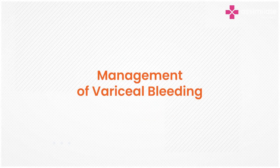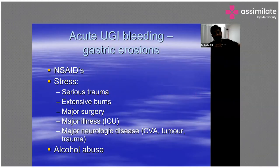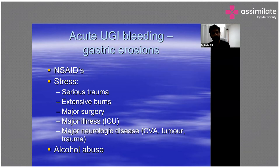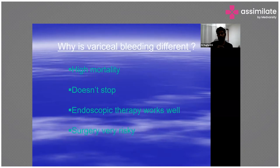Another common cause of upper GI bleeding is gastric erosions, commonly caused by NSAIDs, stress, trauma, burns, major surgery, serious illnesses, ICU admissions, major neurological disorders such as CVA, tumors, trauma, and alcohol abuse.